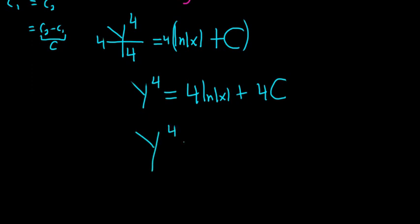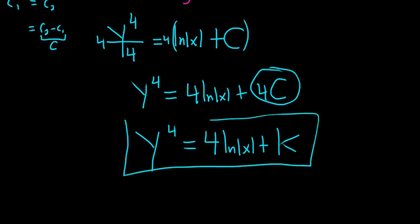So y to the 4th is equal to 4 natural log absolute value of x plus, and we can call this whatever we like. Let's call it big K. So that's equal to big K. And if you want to be nice, you can let the reader know that big K is equal to 4c. Although in this case, it's pretty clear. I hope this video has been helpful. That's it.